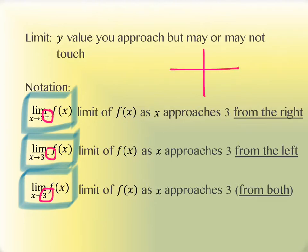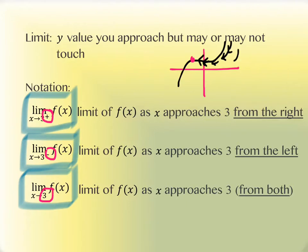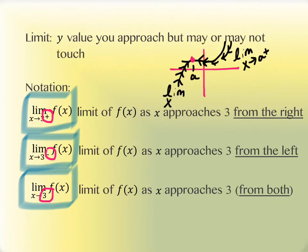If you imagine this is your graph and you care about finding the limit at a particular value, from the right means you're tracing along the curve going toward the point from the right-hand side — so you're moving left, but from the right. From the left means you're coming from x-values that are smaller than the one we're looking at, so you're moving from the left-hand side of the graph.